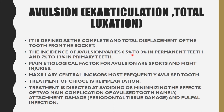The incidence of avulsion varies: 0.5 to 3% in permanent teeth and 7 to 13% in primary teeth, so avulsion is more common in primary teeth. The main etiological factor is sports and fight injuries. The most commonly affected tooth is the maxillary central incisor. The treatment of choice is replantation — putting the tooth back into the socket.